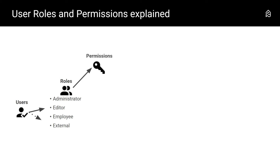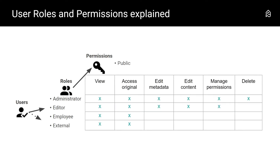Which user roles will be created in your Picturepark depends on what makes sense in your organization. The different permissions define the level of access to a specific content item. We recommend starting with 'to check,' 'public,' 'restricted,' and 'archived,' with more permissions created if required. For each permission, one or several roles can be assigned, effectively controlling the level of access the user role has to specific content. Let's take an example for the permission 'public.'